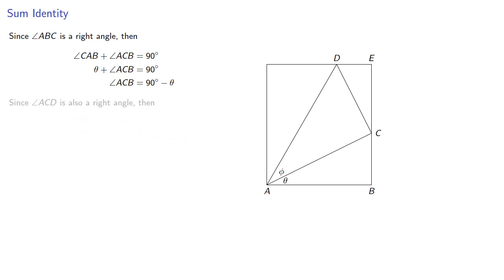Now since ACD is also a right angle, we know that these three angles ACB, 90, and DCE add to 180, and so that says that DCE is theta.